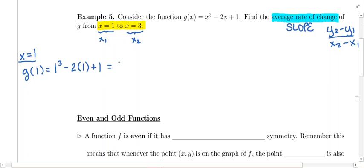Let's simplify. This is going to be 1 minus 2 plus 1. That's going to be 1 minus 2 is negative 1 plus 1. That is going to give us 0. Well actually before I do that, let's go ahead and write this as an ordered pair.